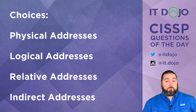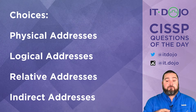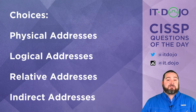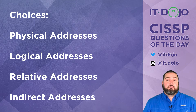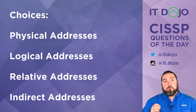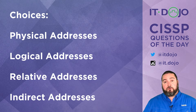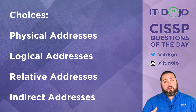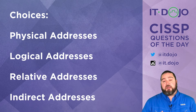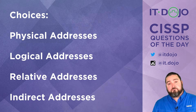The first answer choice is a physical address — that is not the answer you should have selected. A physical address is an address created by the CPU that represents where data is actually stored in memory — its real location. Because of how modern computing systems work, with things like virtual memory, we can't always put something at a physical address and let programs reference it directly.